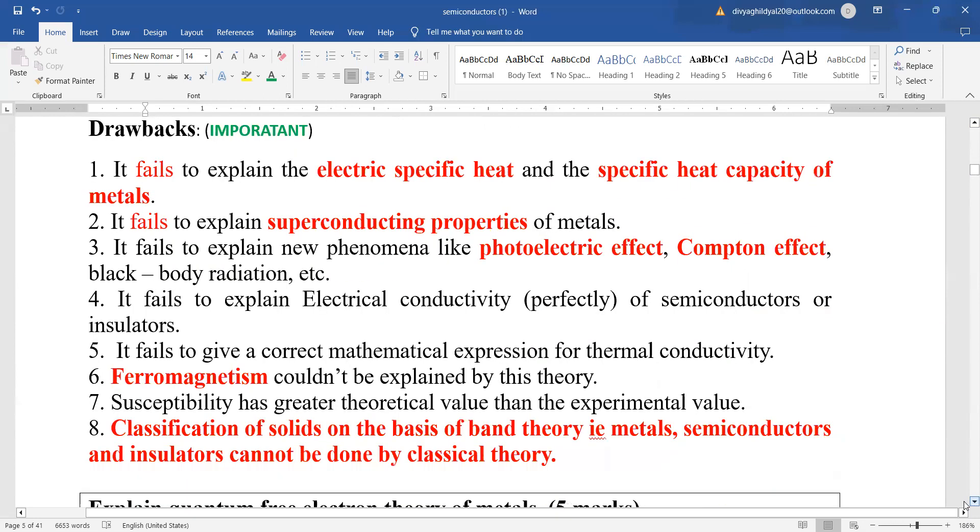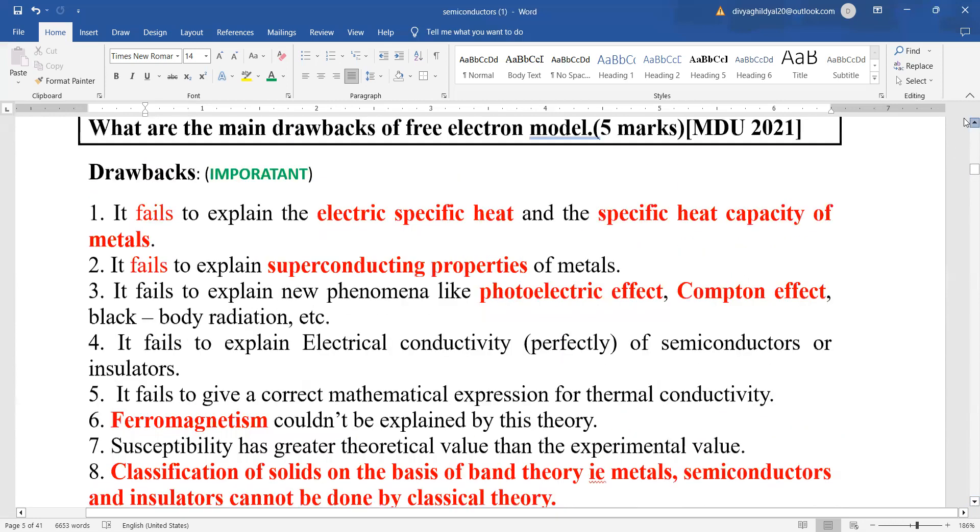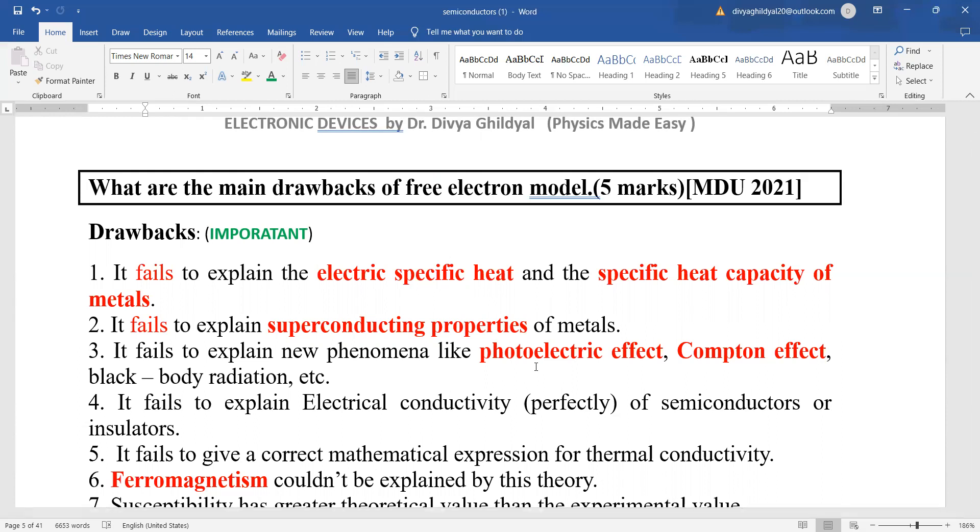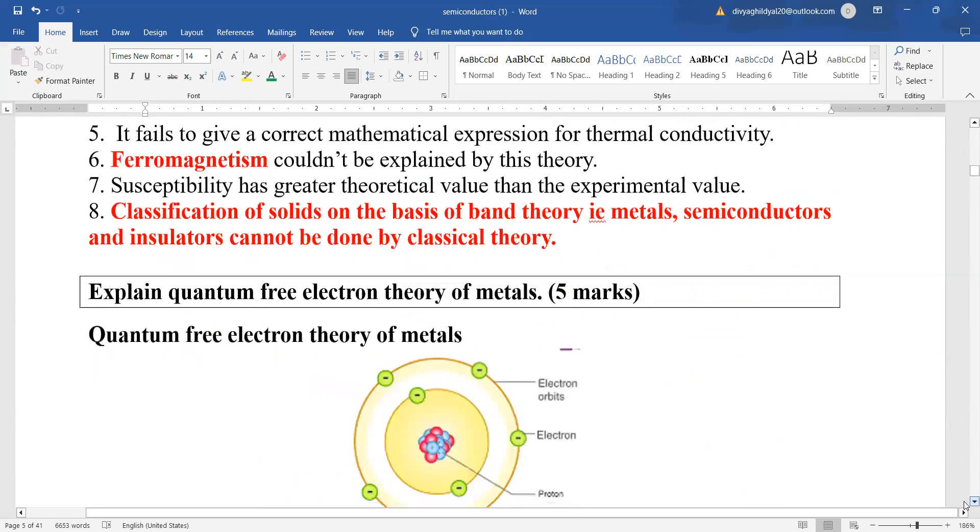The drawbacks of this theory are: this is a very important question. It fails to explain the electric specific heat, the specific heat capacity of metals. It fails to explain the superconducting properties of metals. It fails to explain photoelectric effect, Compton effect, black body radiation, etc. It fails to correct the mathematical expression for thermal conductivity. And lastly, and most important for your topic: classification of solids on the basis of band theory - that is metals, semiconductors and insulators - cannot be done by this theory.